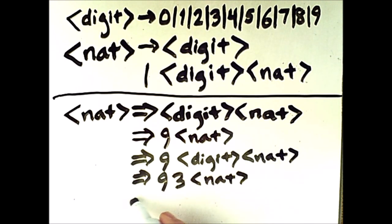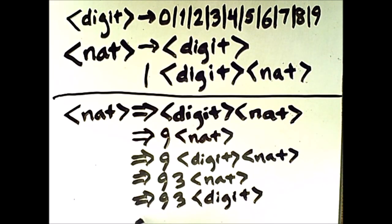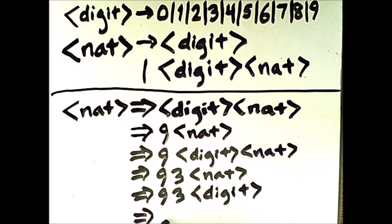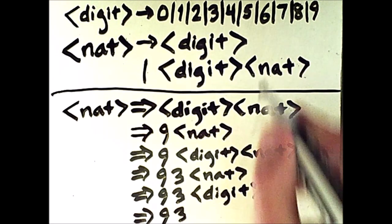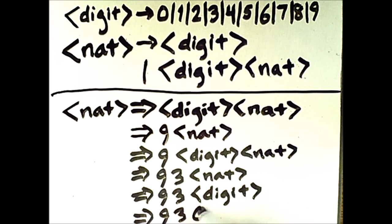And we still have the NAT there, and then at this level, I have 9 and 3. And what will I expand this to now? Well, this time, I'm going to pick the digit rule. So it simply expands to digit, and we're only one step away from being done. We expand this out into any of the digits, and I'll pick the terminal 0.